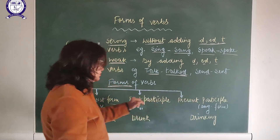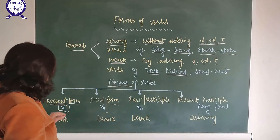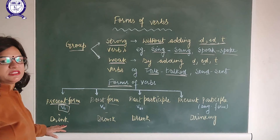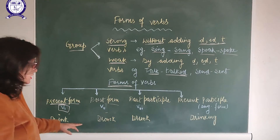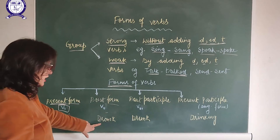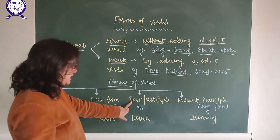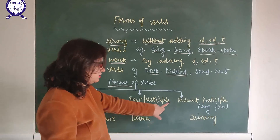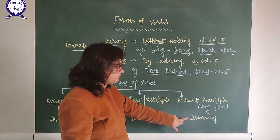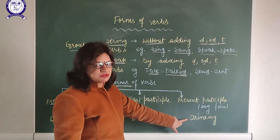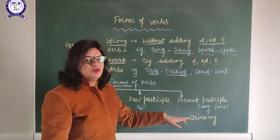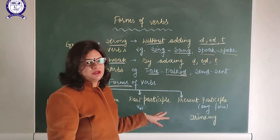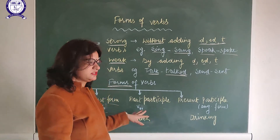Let's see it with an example. The first form is 'drink,' which is the basic verb. The second form is 'drank.' The past participle form — third form — is 'drunk,' and the present participle form is 'drinking.' So these are the four forms of the verb.